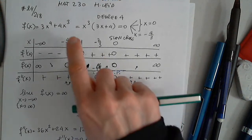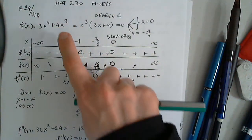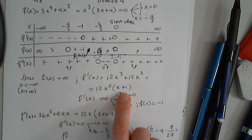Now the first derivative, bring down 4 multiplied by 3, so subtract 1 from the power, plus bring down 4 multiplied by 4, subtract 1 from the power. Immediately factor out 12x squared, x plus 1.